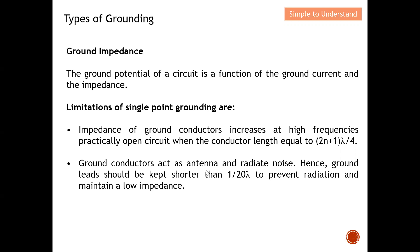The ground conductor acts as an antenna and radiates noise. For example, a lamp or cable can become an antenna and radiate out signal. Therefore, ground leads should be kept shorter than lambda/20 to prevent radiation and maintain low impedance. The key idea is to keep the length less than 1/20 of the wavelength of the highest frequency. With this, you minimize radiation and reduce noise from radiating out.